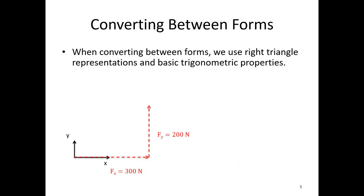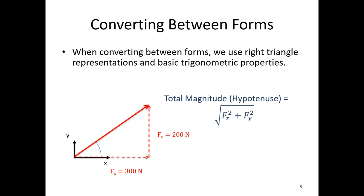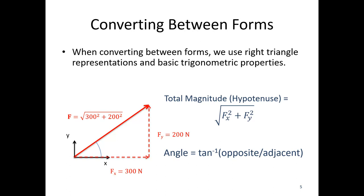To go the other way — say we have an x component of 300 Newtons and a y component of 200 Newtons and want the overall magnitude and direction. Those are the legs of the triangle, and we draw in the hypotenuse. For the overall length of that hypotenuse, we use the Pythagorean theorem: the square root of fx squared plus fy squared, so the square root of 300 squared plus 200 squared. For the angle theta, we use the inverse tangent: the tangent is the ratio of opposite over adjacent, so the inverse tangent of 200 over 300 gives us the angle.